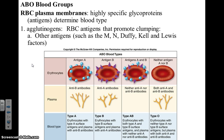Your blood type is determined by specific proteins or antigens found on the surface of your red blood cells. Blood types include type A, B, AB, and O. There are also other varieties of blood types due to proteins that are not as commonly known that are on the red blood cells.